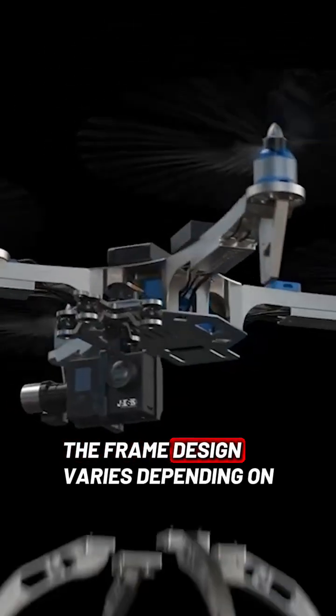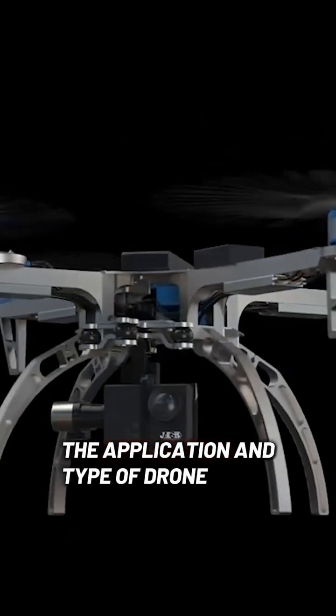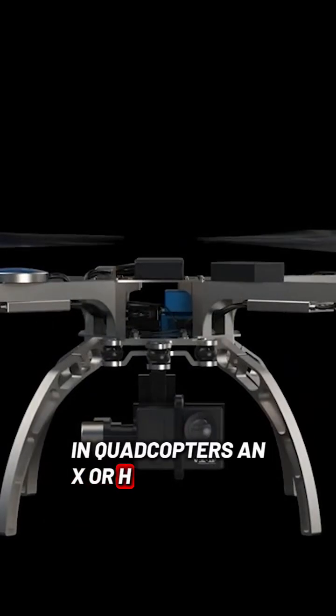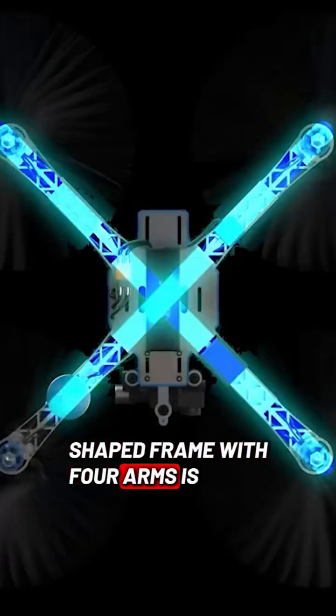The frame design varies depending on the application and type of drone. In quadcopters, an X- or H-shaped frame with four arms is common.